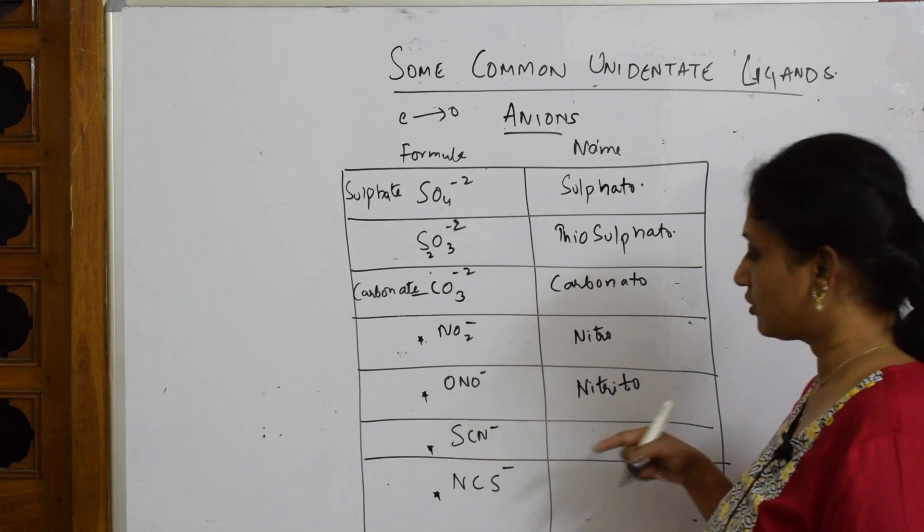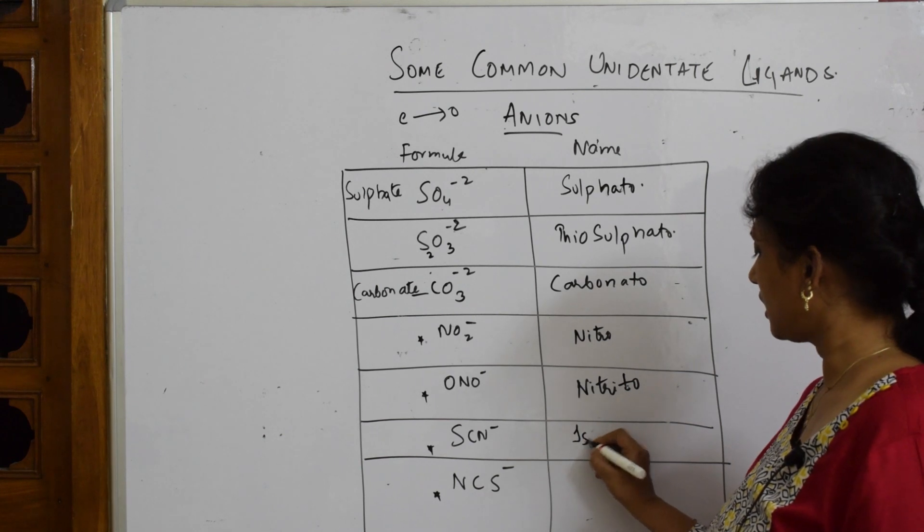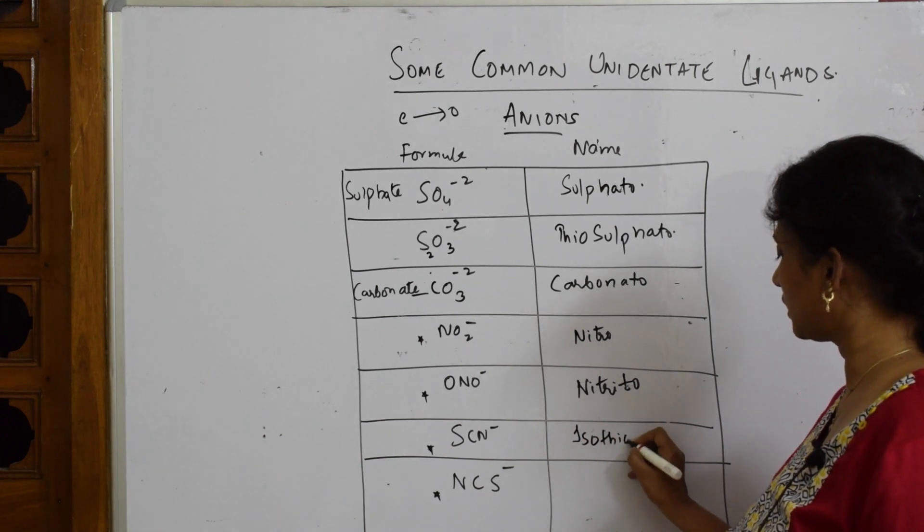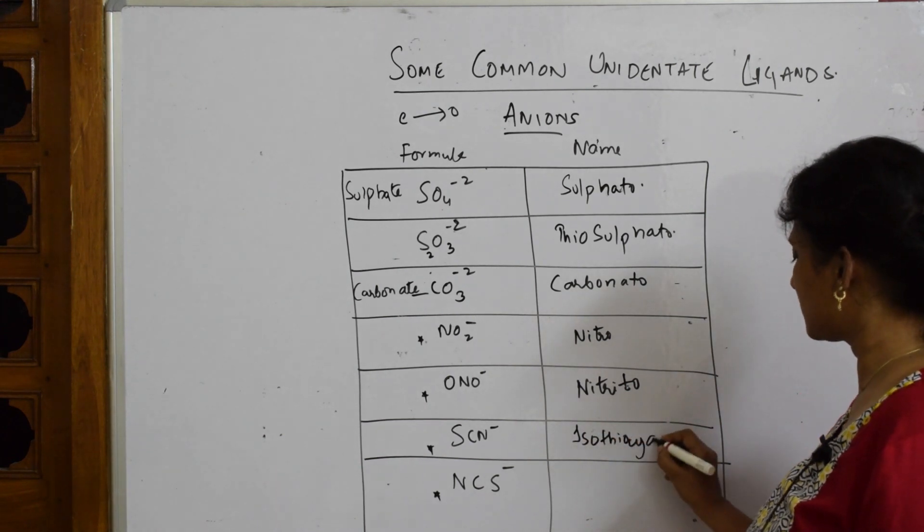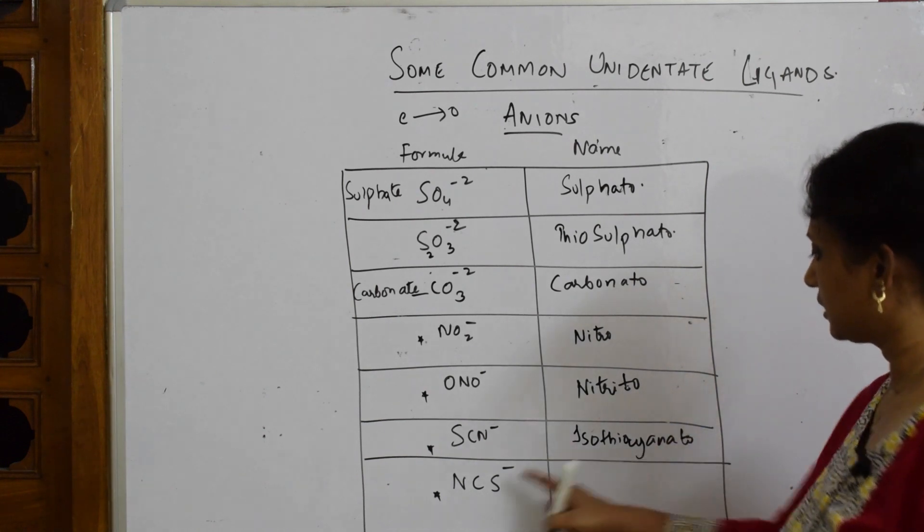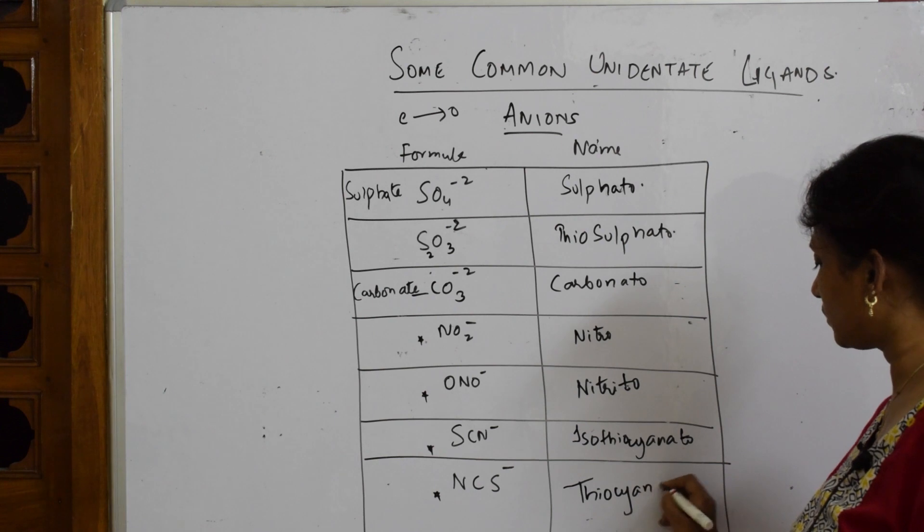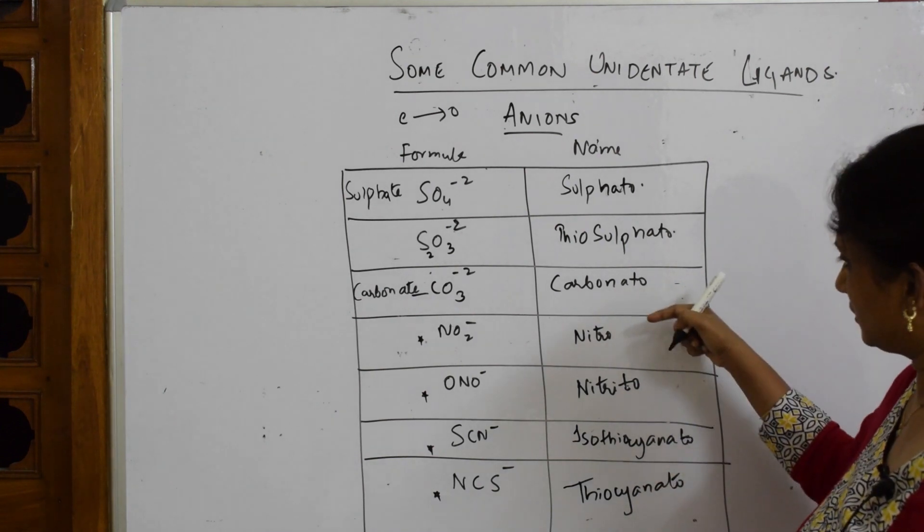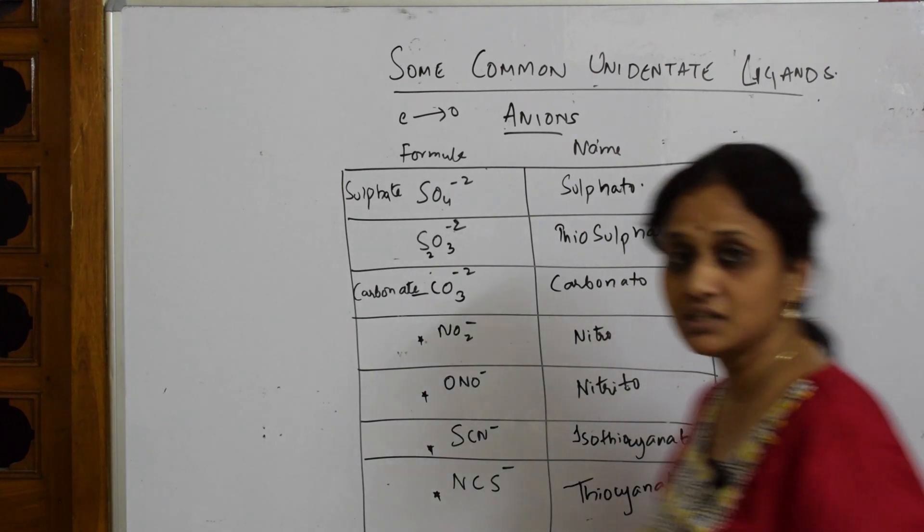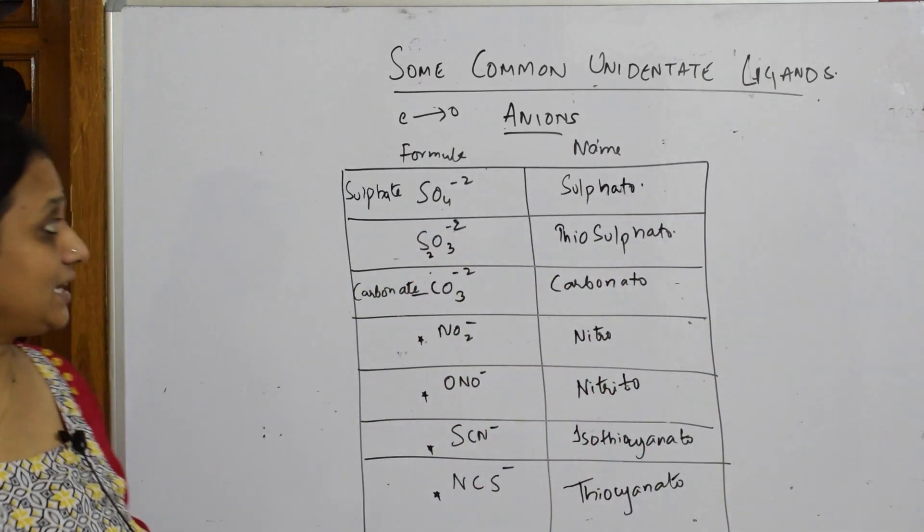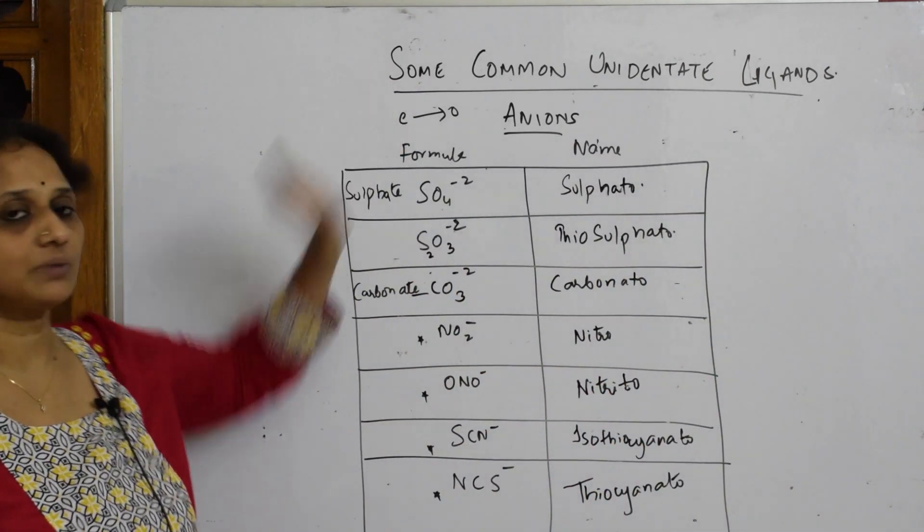Isothiocyanato, thiocyanato - a little bit different. Just mark this. So this is how you're going to name your anionic ligands: 'e' replaced by 'o'.